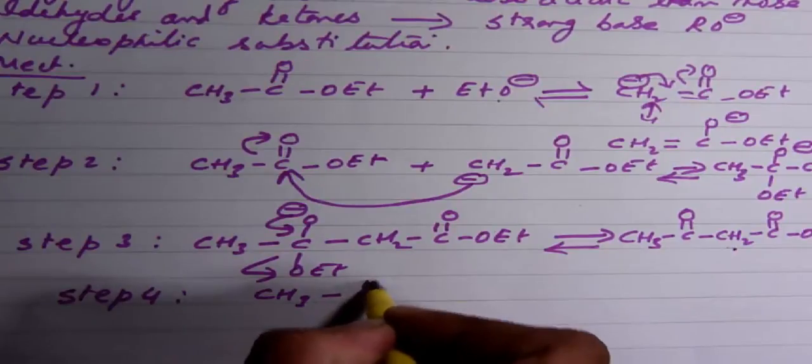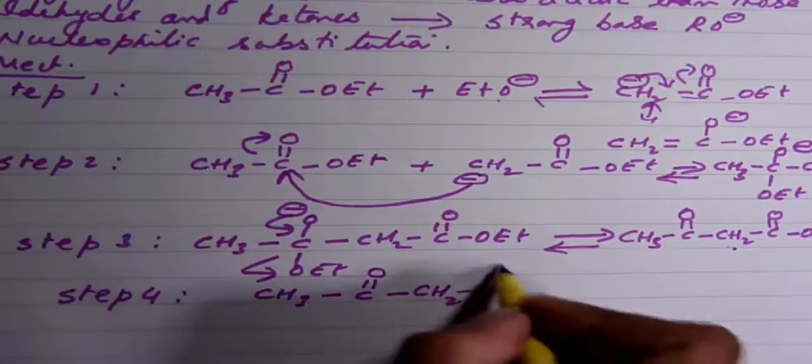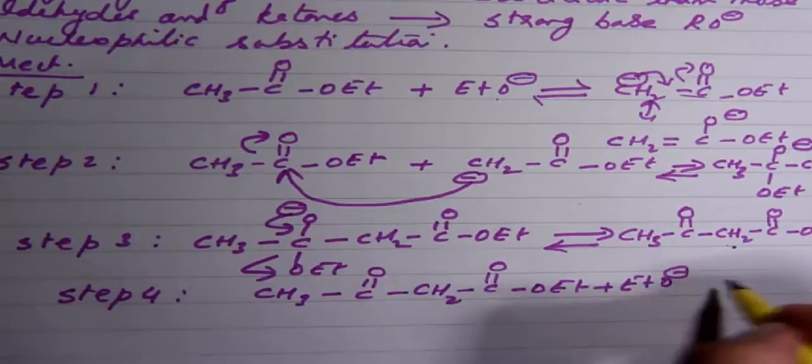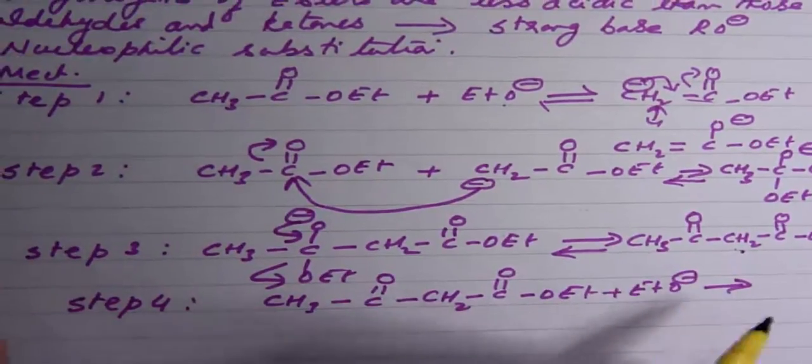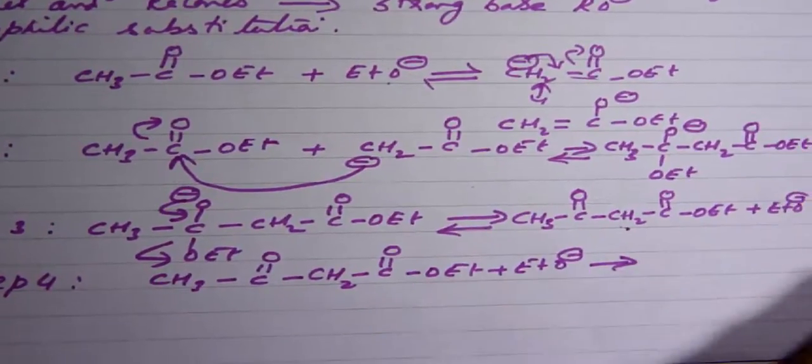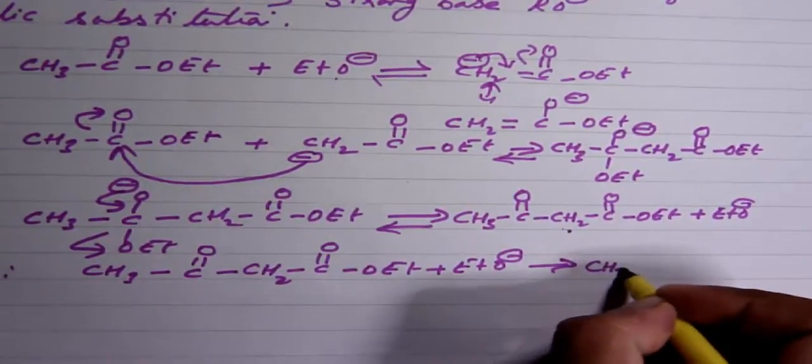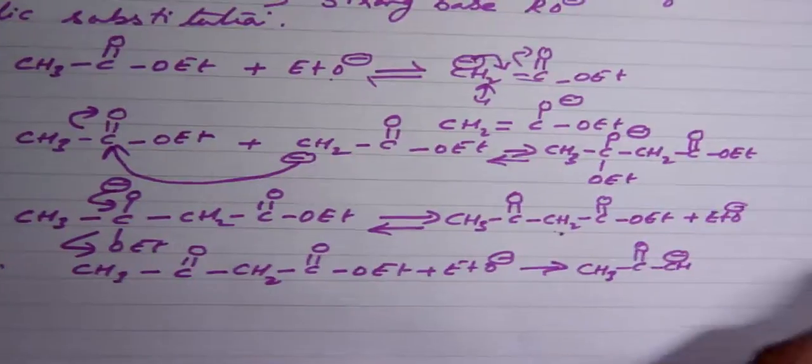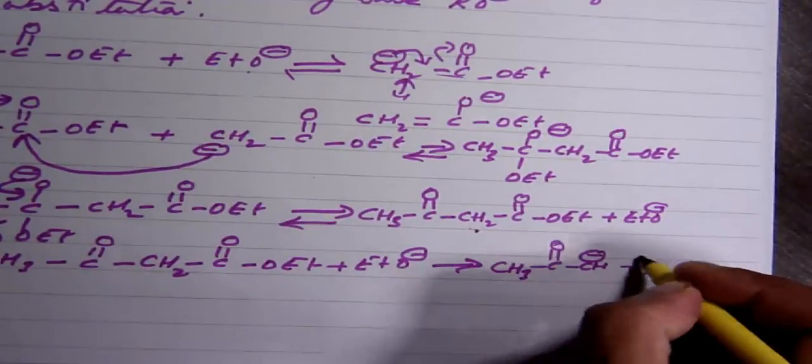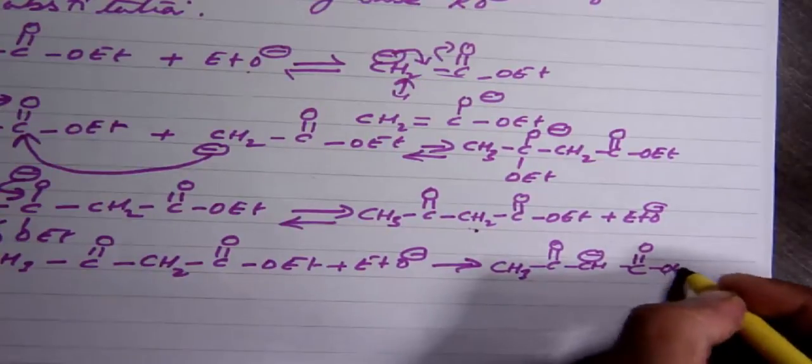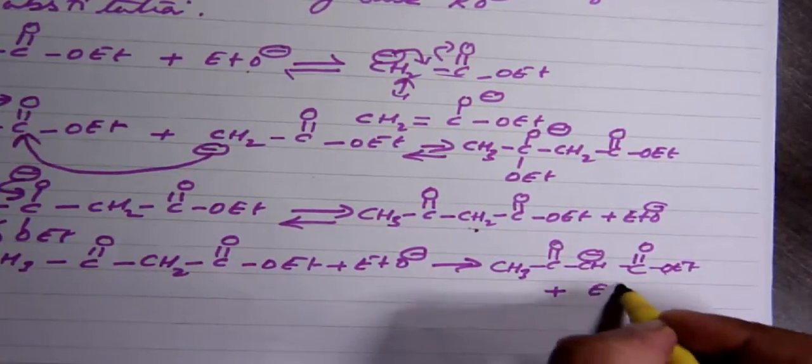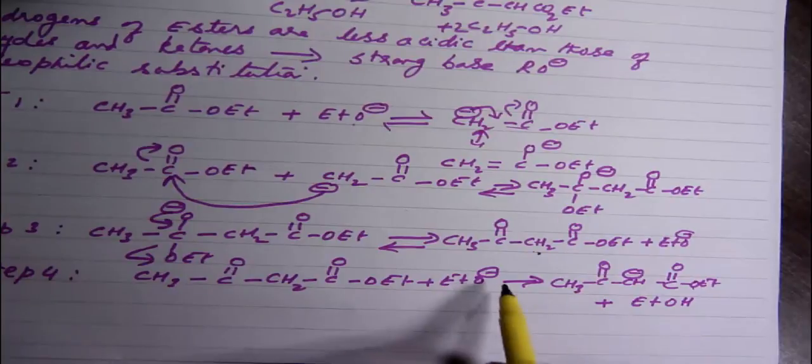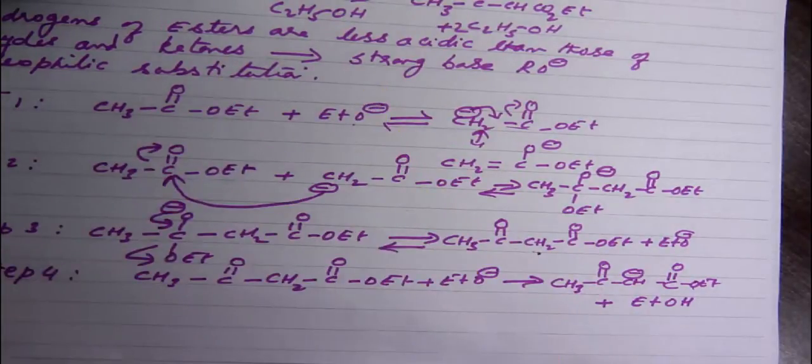When I say irreversible I'm implying that it is very less reversible. So this ester now reacts with the alkoxide—this is almost irreversible so I'm not showing the reversibility here. This picks up the proton and essentially you get CH3-CO-CH⁻-COOEt plus EtOH. So it is the irreversible part of the fourth step that pulls the entire mechanism forward.